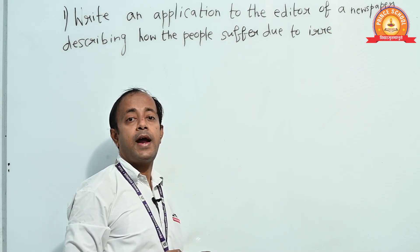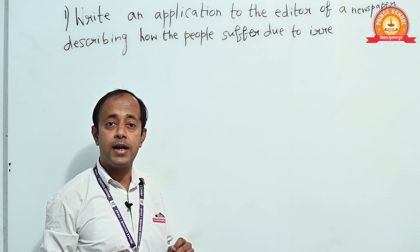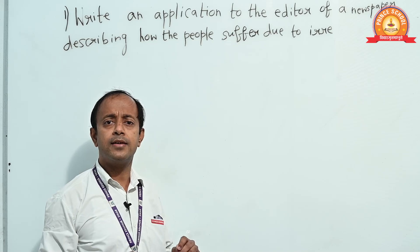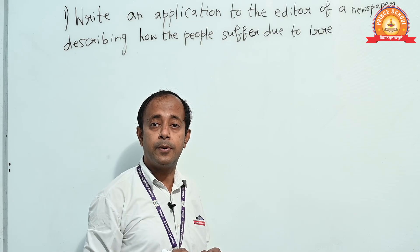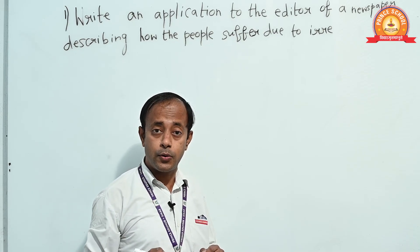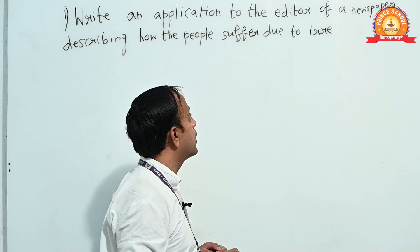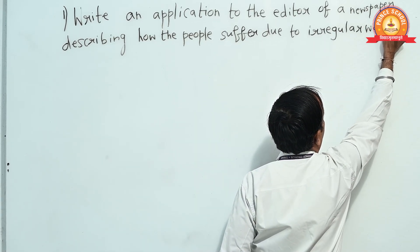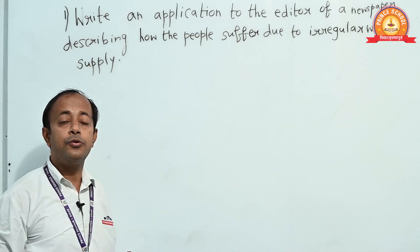The full question is: write an application to the editor of a newspaper describing how people suffer due to irregular water service. In big cities, water is supplied from the municipality, and in villages and suburban areas it is supplied from panchayat and other organizations. If the water supply is irregular, especially at the time of summer, people will suffer a lot. It is a matter of grave concern. This is a formal letter because you are writing to the editor of a newspaper.